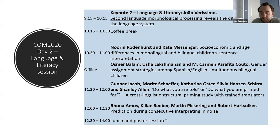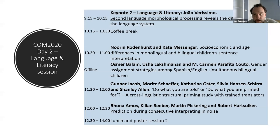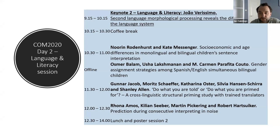Joao's work spans psycholinguistics and multilingualism, and he's published in many of the top journals in these fields, including Cognition, Journal of Memory and Language, Language Acquisition, Linguistic Approaches to Bilingualism, and Bilingualism Language and Cognition, where he also works as a statistics advisor. In today's talk, he'll present a synthesis of his recent research on native and non-native morphological processing, and what this tells us about the graded nature of non-nativeness when we look at morphology — specifically, how second language morphological processing reveals the differentiation of the language system.